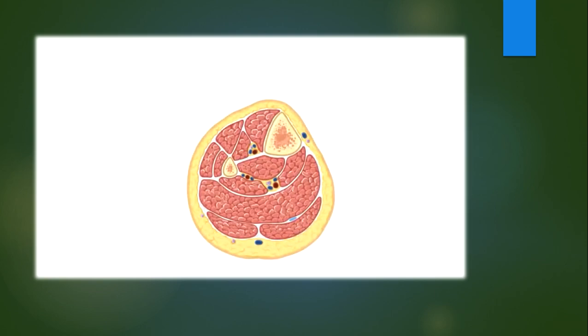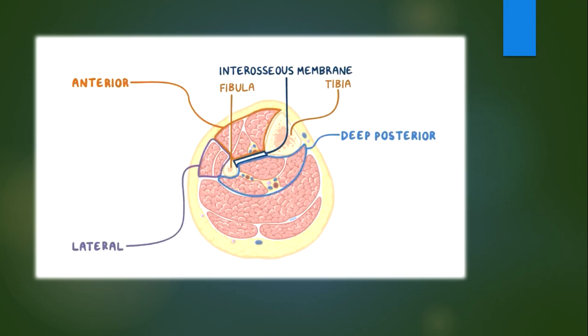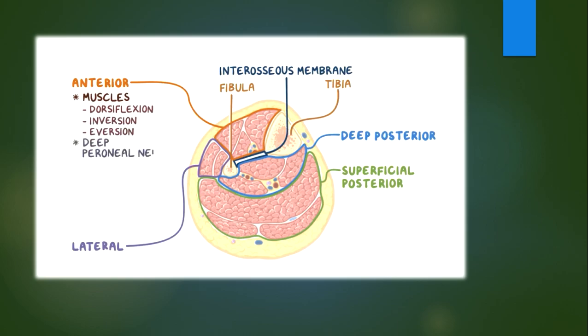If we look at a cross section of the lower leg, we can see that the fascia sends intermuscular septa that together with the interosseous membrane between the tibia and fibula divide the lower leg into four compartments: the anterior, lateral, deep posterior, and superficial posterior compartments all contain their own muscles and blood vessels. For example, the anterior compartment holds the muscles that perform dorsiflexion of the foot and also aid in its inversion and eversion. The deep peroneal nerve innervates them and its blood supply comes from the anterior tibial artery and veins.